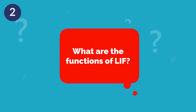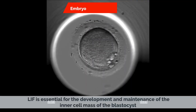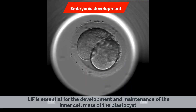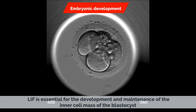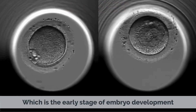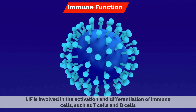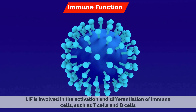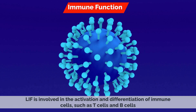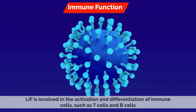What are the functions of LIF? LIF has a wide range of biological functions. Regarding embryonic development, LIF is essential for the development and maintenance of the inner cell mass of the blastocyst, which is the early stage of embryo development. Regarding immune function, LIF is involved in the activation and differentiation of immune cells, such as T cells and B cells.